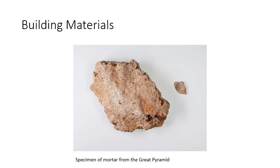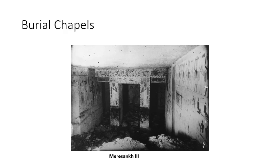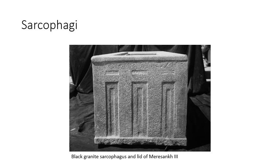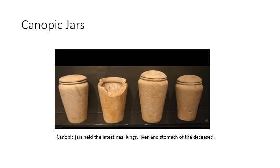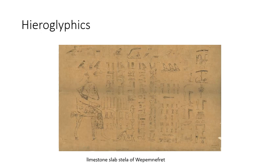Maybe I'm interested in something entirely different — the materials that these mastabas or pyramids are built of. Maybe I'm interested in the burial chapels themselves, not the entire mastaba, but just the burial chapels and what's on those particular walls. The sarcophagi found within them, the different styles of sarcophagi and how they're made. Or maybe I'm interested in the development of canopic jars — these are the jars that held the organs of the deceased that they would need in the afterlife, and they changed over time.